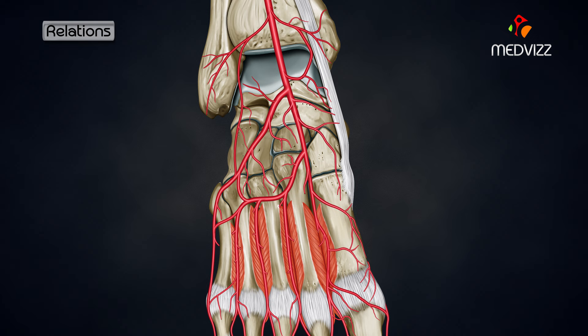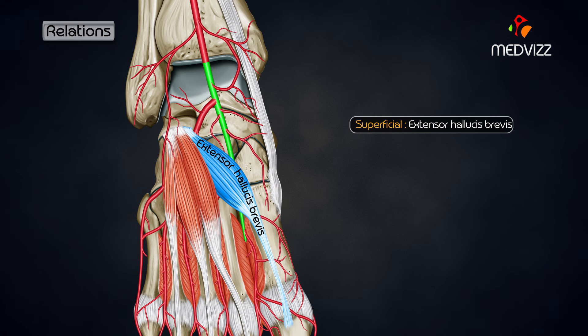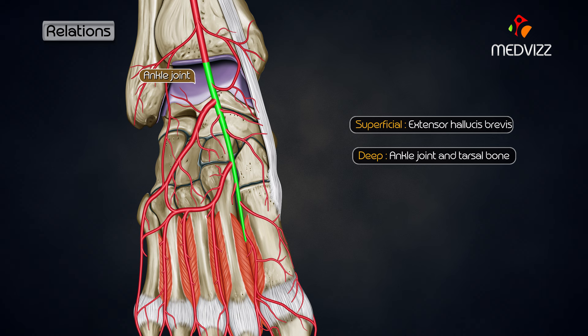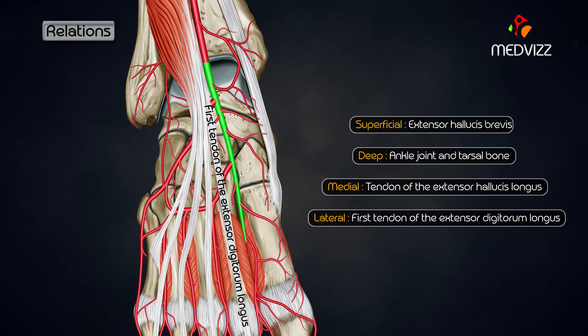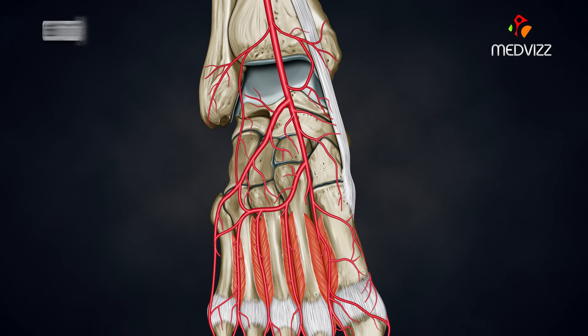Regarding its relations: superficially, it is related to extensor hallucis brevis, which crosses the artery superficially from lateral to the medial side. The deep structures are the ankle joint as well as the tarsal bones. Medially it is related to the tendon of extensor hallucis longus, and laterally it is related to the first tendon of extensor digitorum longus.